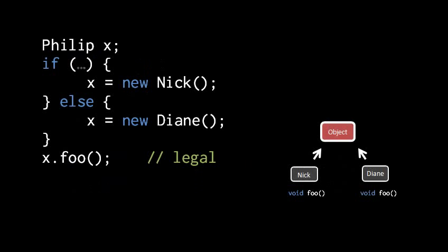So, what we can do now is create a reference of type Philip, and then we can assign any object of a class which implements Philip to this reference, and then invoke the methods defined in Philip via that reference. Now when we write x.foo, this is legal because x is of type Philip, and Philip is declared to have such a method foo. Which version gets invoked here, of course, depends upon the type of the actual object held in x at the time of the call.